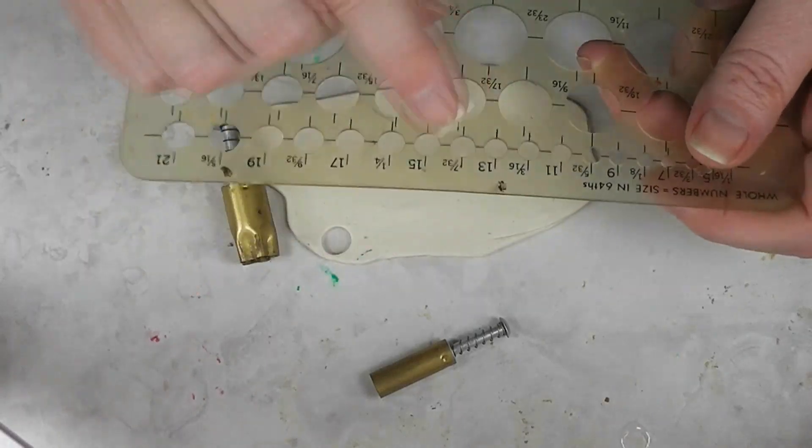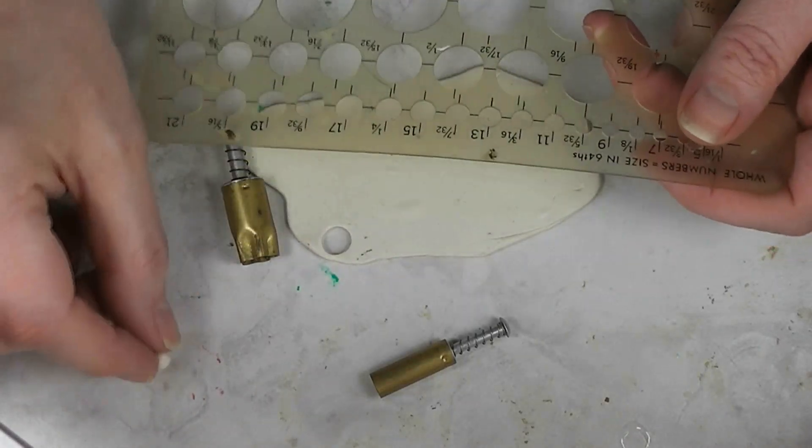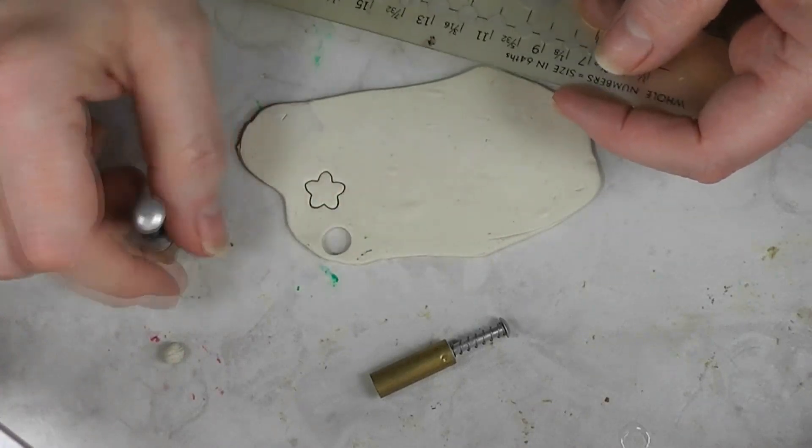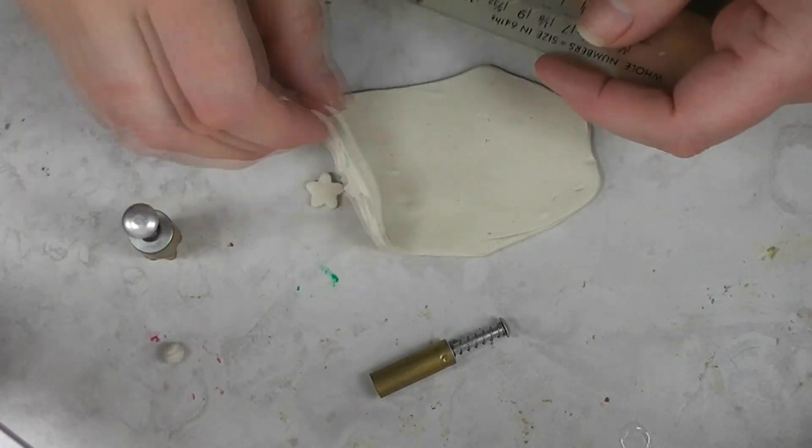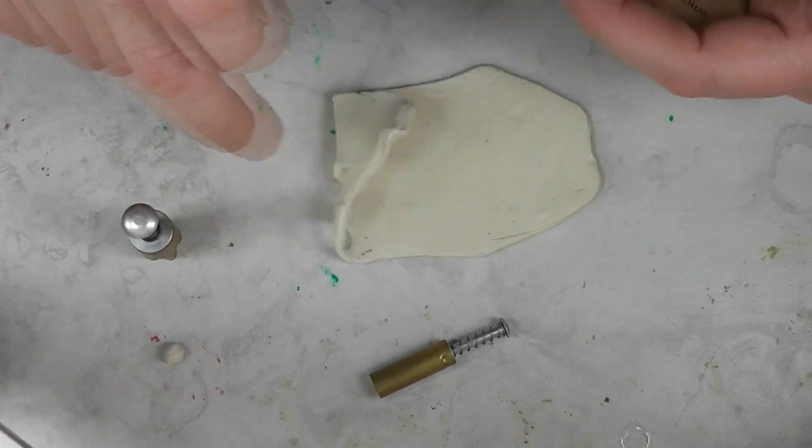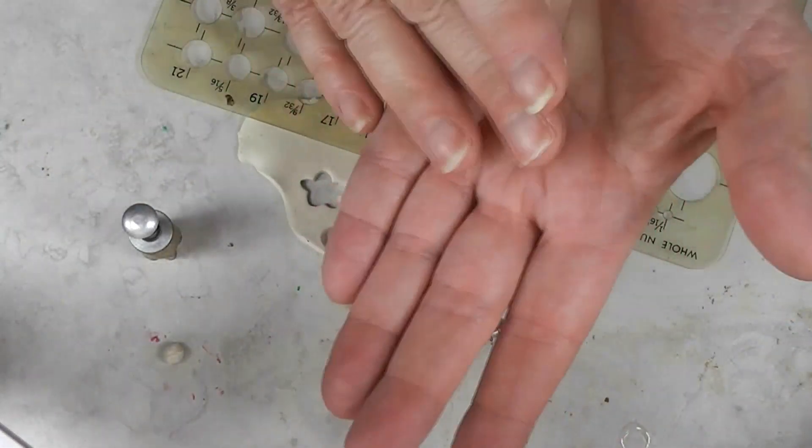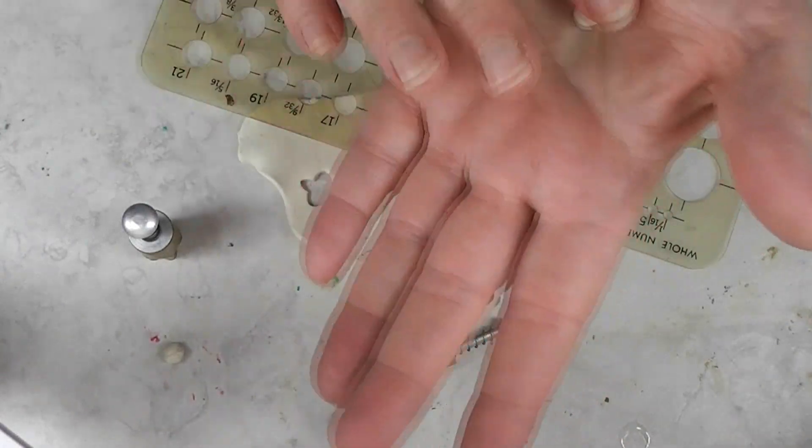And this is not quite 7/32nds of an inch, so it's not big enough. So I'll go to a bigger size. And the shape of your cutter makes no difference at all because we're just using it to cut our clay into a size. We're not cutting it into a shape.